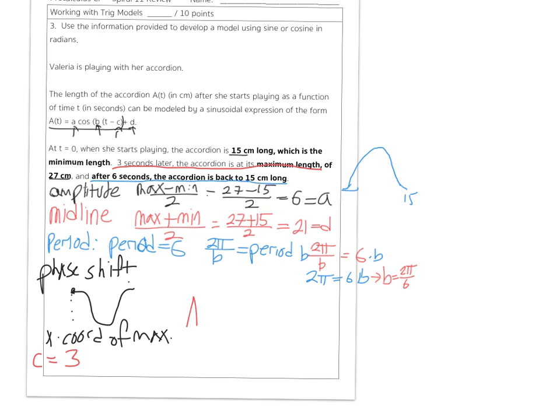In building this equation, we get amplitude of 6. That's my a. Cosine. B value of 2 pi over 6. X minus my c value, 3. And then plus my d value of 21.